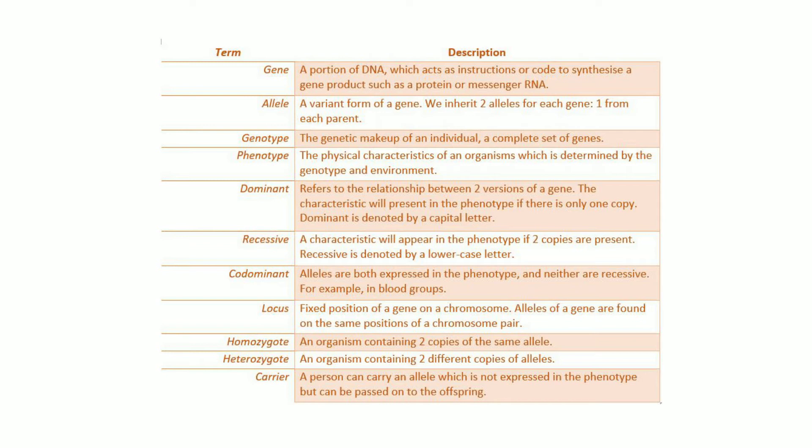Genotype: this is the genetic makeup of an individual, a complete set of genes. Phenotype: this is the physical characteristics of an organism which is determined by the genotype and the environment. Dominant: this refers to the relationship between two versions of a gene. The characteristic will present in the phenotype if there's only one copy.